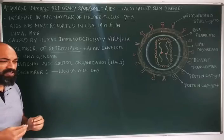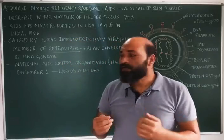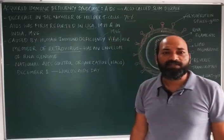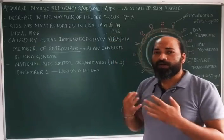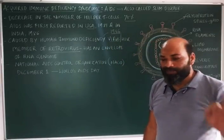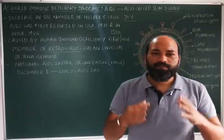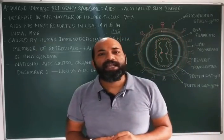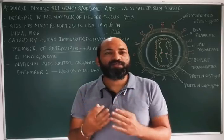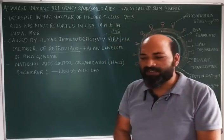The pathogen which causes AIDS is a virus named HIV — Human Immunodeficiency Virus. This name came in 1986, given by the International Committee for Viral Nomenclature. Prior to that, Robert Gallo in the 1970s discovered a virus called HTLV1 — Human T-cell Lymphotrophic Virus.